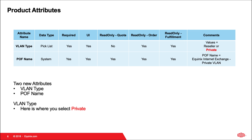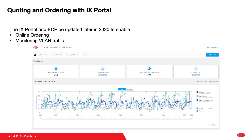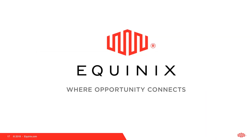Product attributes. This table shows the different attributes in this product offering. The two attributes are VLAN type and POF name. The data type for VLAN type will be from a picklist — it is required, and the value when selected will equal private. The POF name will therefore become Equinix Internet Exchange Private VLAN. The IX portal and ECP will be updated later in 2020 to enable online ordering and monitoring of VLAN traffic. That concludes our learning demo on how to order an Equinix Internet Exchange private VLAN. Thank you very much.